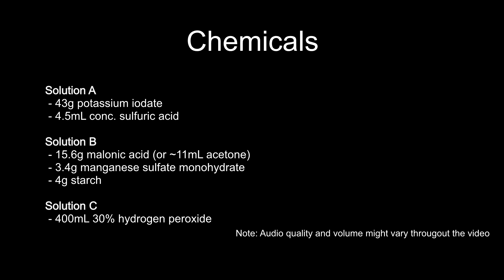For this experiment, we need to make three different solutions. Solution A will consist of 43 grams of potassium iodate and 4.5 milliliters of concentrated sulfuric acid. For solution B, we will need 15.6 grams of malonic acid or it can be substituted with 11 milliliters of acetone. We will also need 3.4 grams of manganese sulfate monohydrate as well as 4 grams of soluble starch. Solution C is the easiest to make and we will only need 400 milliliters of 30% hydrogen peroxide for it.